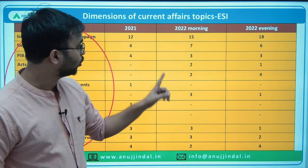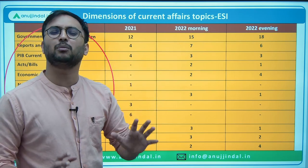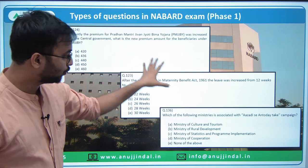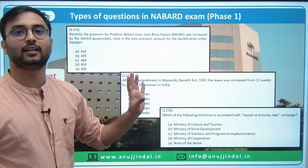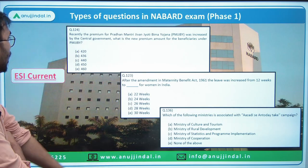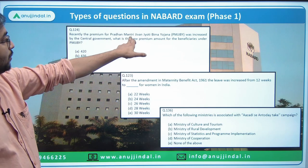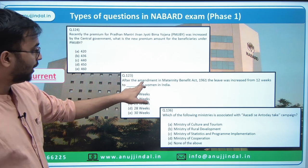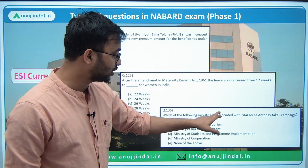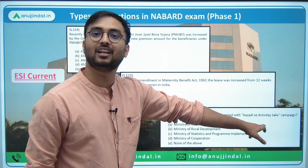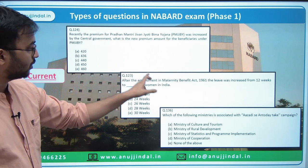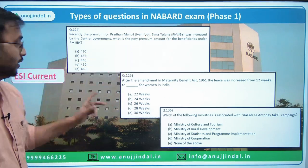Questions from ESI Phase 1 include items like: amendment related to the Maternity Benefit Act — a scheme or act or bill; 'Which ministry is associated with Azadi se Antyodaya campaign?' — again a government campaign or initiative. All such questions can be covered from PIB alone. These are the types of questions asked from current affairs in the ESI section of Phase 1.